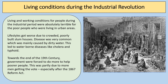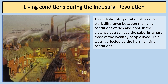Living and working conditions for some people during the industrial period were absolutely terrible — harsh overcrowding, poverty, and cramped miserable conditions. Lifestyles got worse due to crowded, poorly built slum houses, some known as back-to-back houses. Disease was very common, mainly caused by dirty water, leading to waterborne diseases like cholera and typhoid. Towards the end of the 19th century governments were forced to do more to help poorer people, partly due to more men getting the vote, especially after the 1867 Reform Act. There was a stark difference between the living conditions of rich and poor — in the distance, the suburbs where wealthy people lived were unaffected by the horrific conditions.